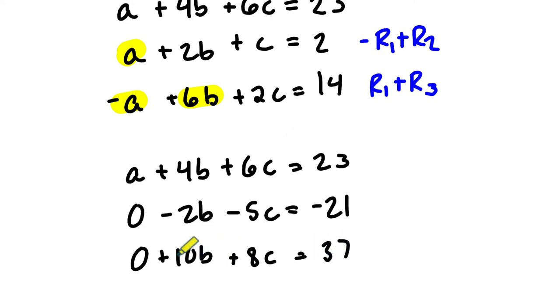And we're almost there. We just need to eliminate this term. I think the easiest way to do that, we have negative 2B right here. So 5 times that, 5 times the entire second row plus the third row should do it. So let's try that out.